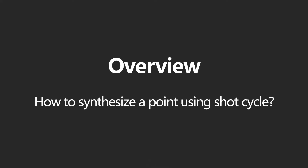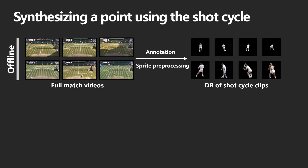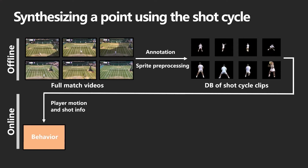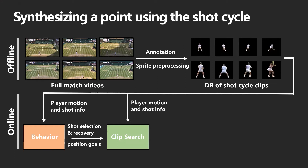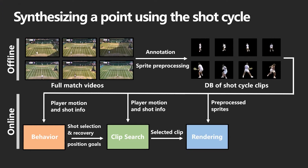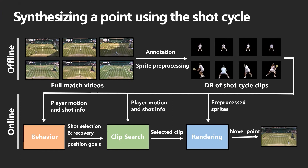We use the structure provided by our shot cycle state machine to synthesize novel points from real-world footage. Starting with unannotated broadcast tennis videos, we first extract the shot cycle clips and organize them into a database. To make our tennis players behave like real-world players, we build player-specific behavior models from the database examples. These models predict shot selection and player recovery position goals. Next, we select the shot cycle clip where the player best meets desired behavior goals. Finally, to make the synthesized tennis players look realistic, we manipulate these video clips to ensure visual continuity, such as adjusting lighting conditions. The result, repeated for multiple shot cycles, is a synthesized novel point.